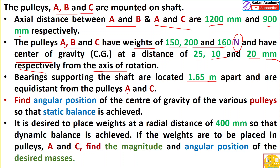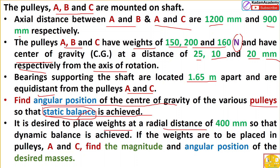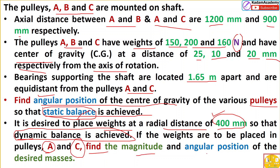The distance from pulley A and C is given. Find the angular position of the center of gravity of various pulleys so that static balance is achieved. For the second condition, it is desired to place weights at a radius of 400 millimeters so that dynamic balancing is achieved. If the weights are to be placed in pulley A and pulley C, we have to find their magnitude and angular position. We represent the numerical in the form of rotating masses in different planes and their longitudinal arrangement.